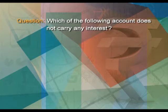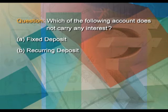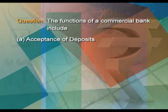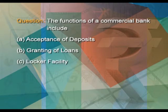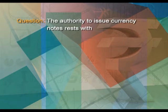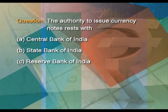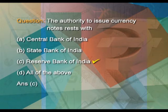Now let us test our knowledge. First question: which of the following accounts does not carry any interest? A) fixed deposit, B) recurring deposit, C) specialized bank, or D) current account? The answer is current account. Second question: the functions of commercial banks include A) acceptance of deposits, B) granting of loans, C) locker facilities, or D) all of the above? The answer is D, all of the above. Third question: the authority to issue currency notes rests with A) Central Bank of India, B) State Bank of India, C) Reserve Bank of India, or D) all of the above? The answer is C, Reserve Bank of India.